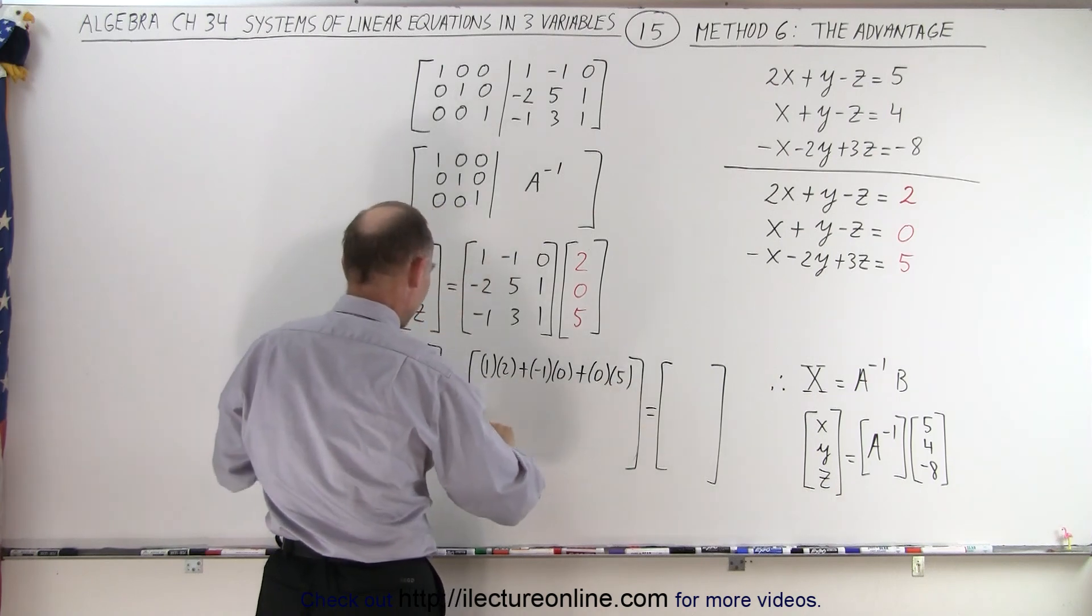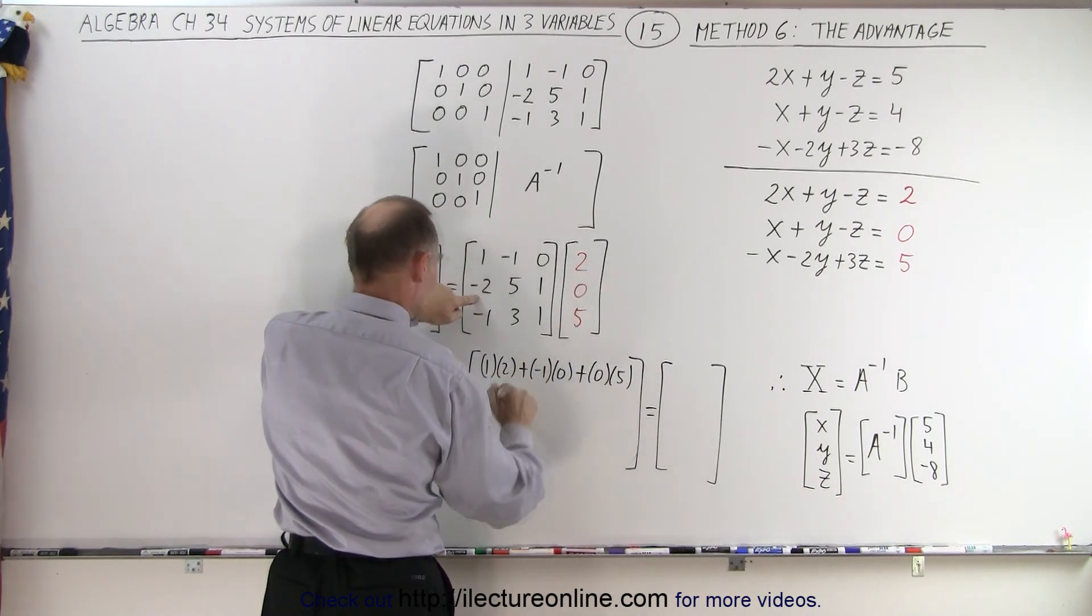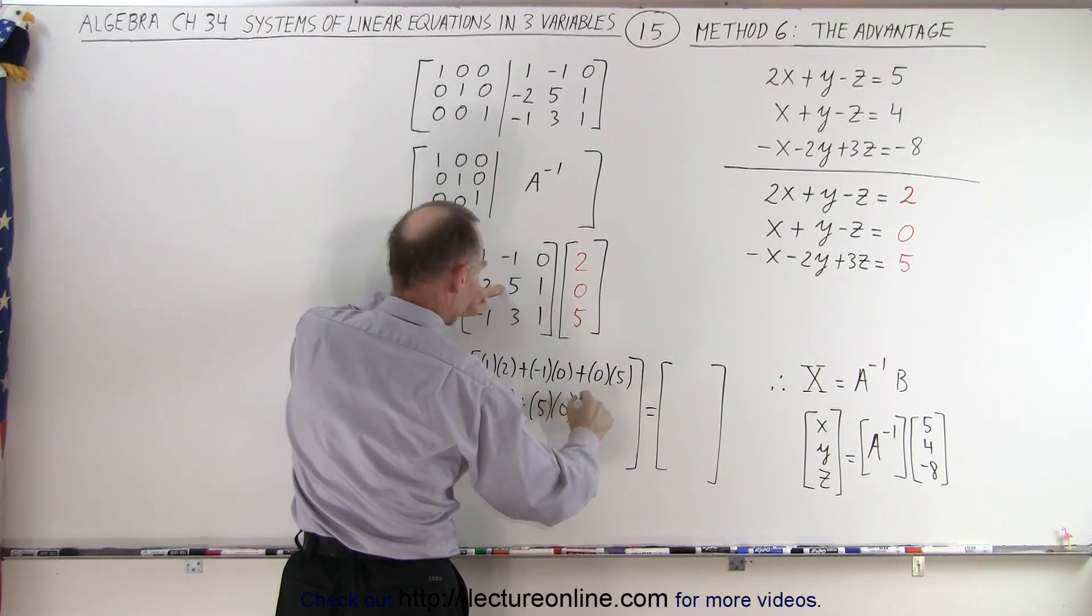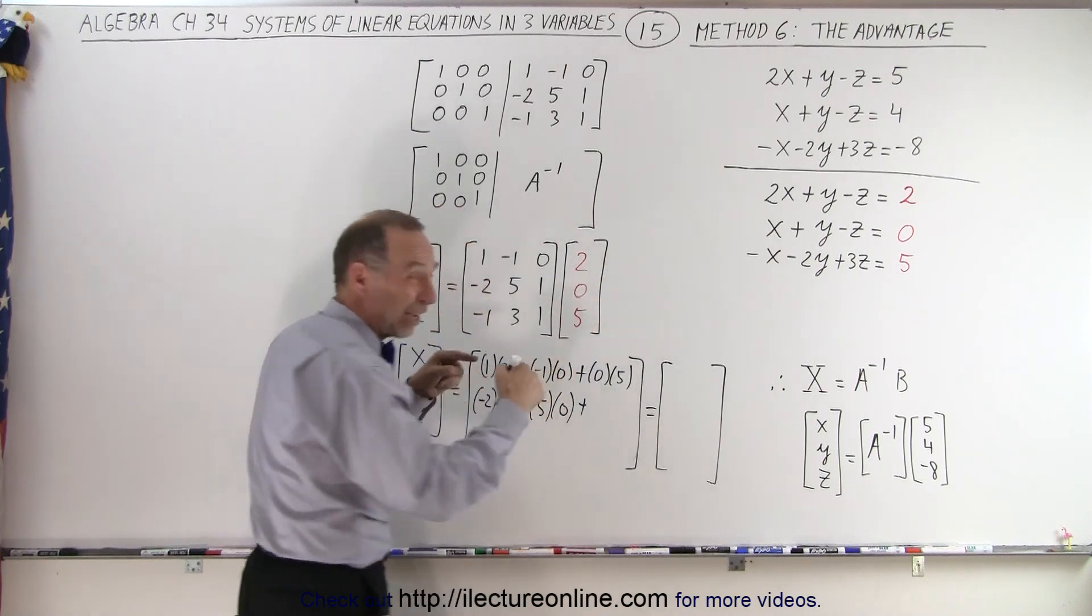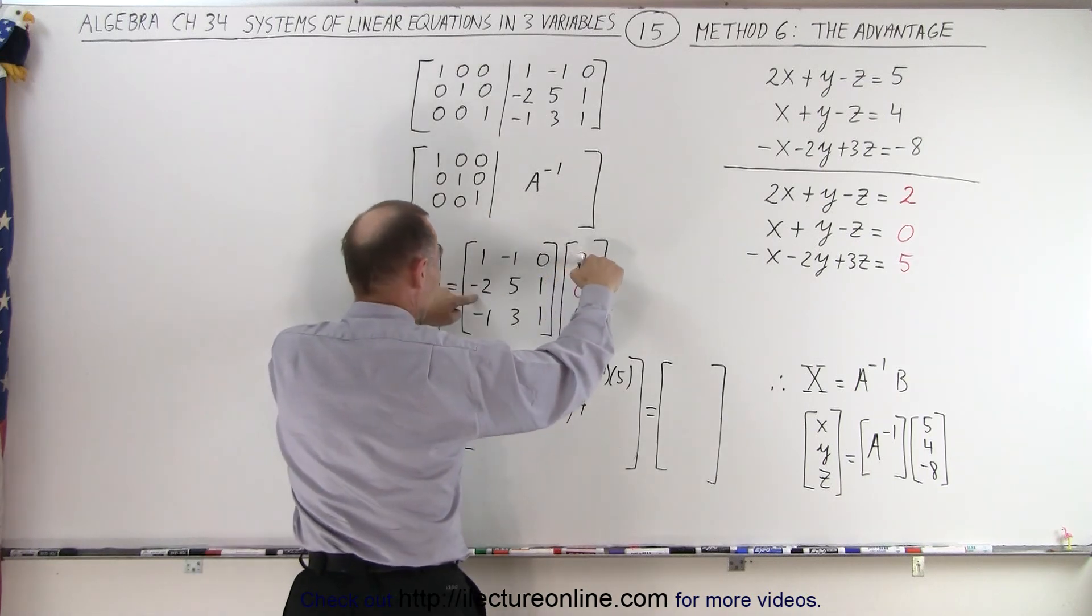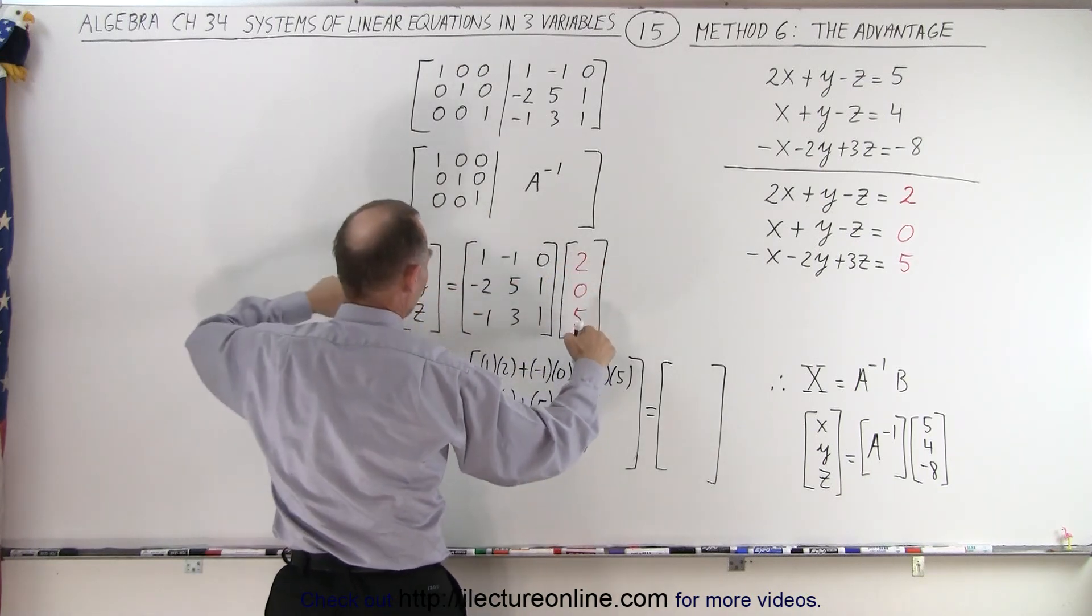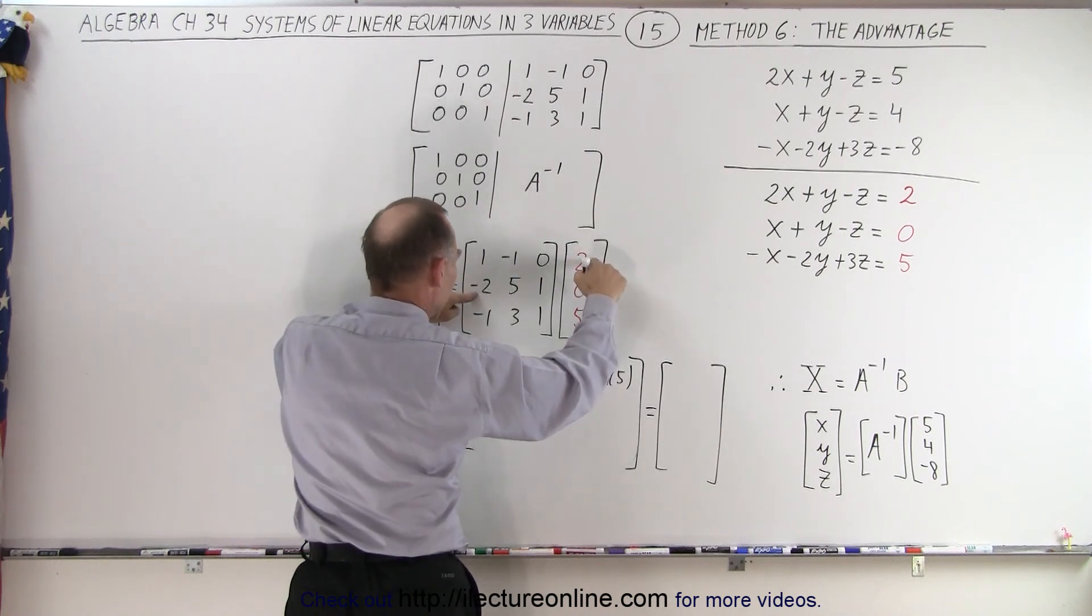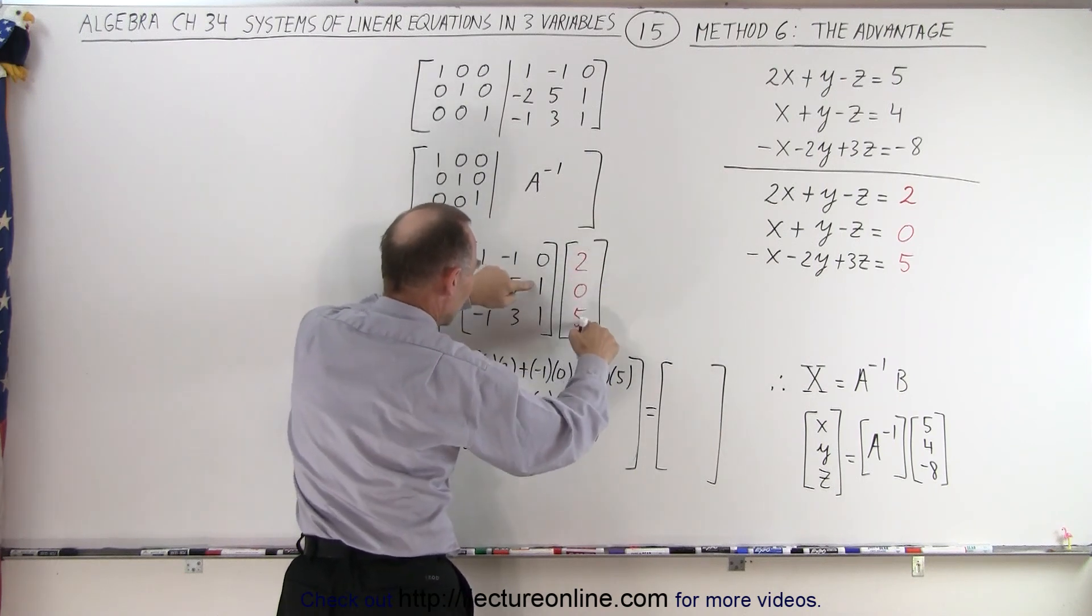And for the second value for Y, we get negative 2 times 2 plus 5 times 0 plus, so we get this times this. I have to do it over again, so I go this way. My left finger goes to the right, my right finger goes down, so it's negative 2 times 2, 5 times 0, 1 times 5.